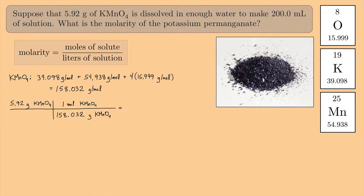The grams will cancel. I'll be left with moles. And if you do this on the calculator, you end up getting 0.037461 moles of potassium permanganate. So that takes care of the numerator.